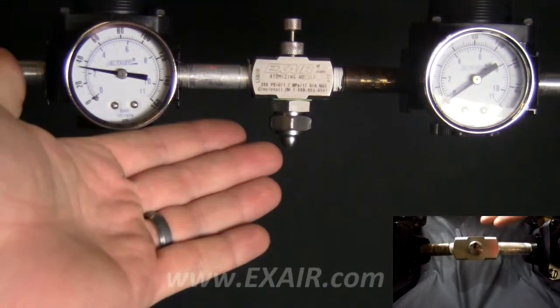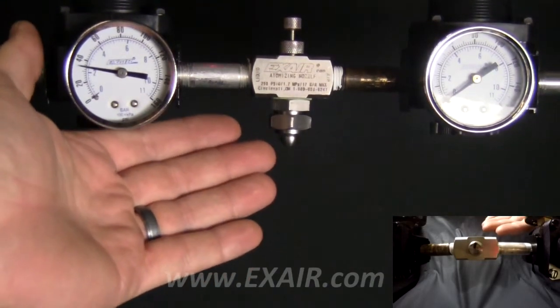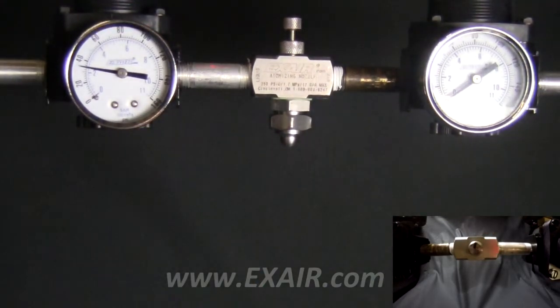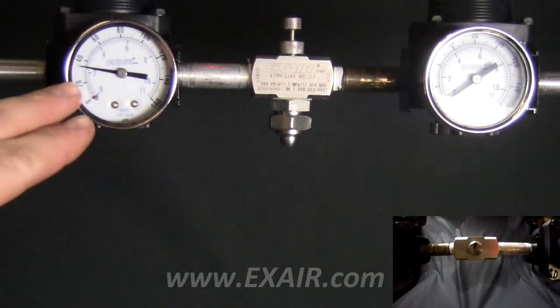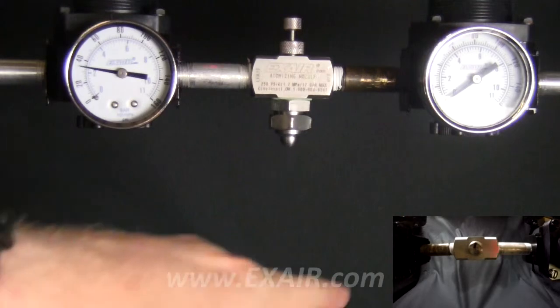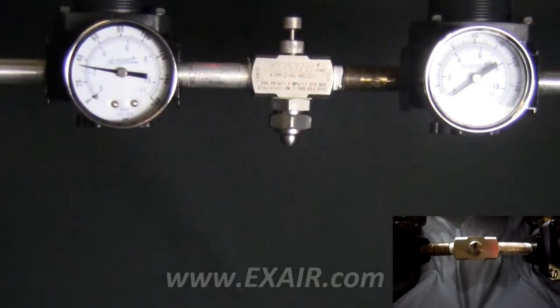For today's purpose we are going to use a model AW1020SS, which is an internal mix wide-angle round pattern atomizing spray nozzle. The liquid pressure we will be running is right around 32 psi and the air pressure will be the same.